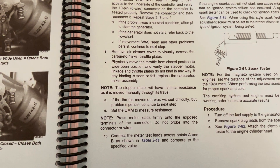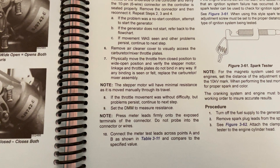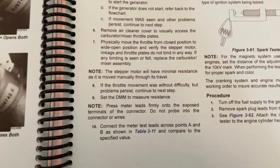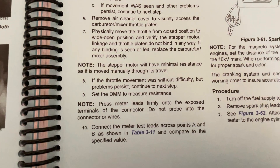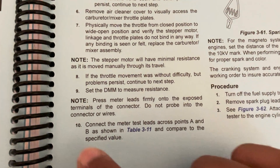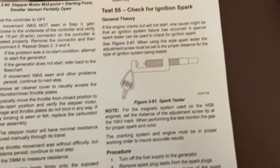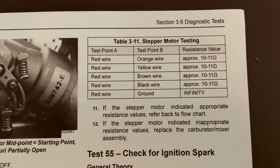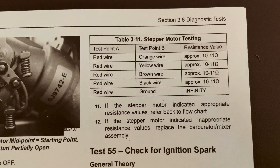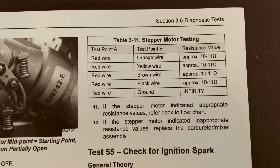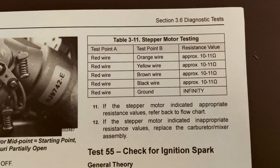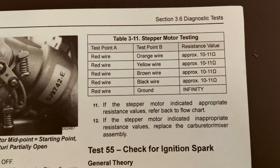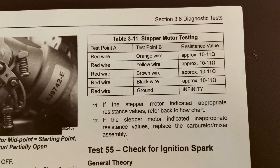If any binding is seen or felt, replace the carburetor mixer assembly. On the other hand, if the throttle movement was without difficulty but the problem persists, continue to the next step: set your multimeter to measure resistance. We're going to test resistance at the stepper motor 10-pin 4-wire connector. Table 3-11, stepper motor testing, shows us test point A, test point B, and the resistance values we should have across the test points.